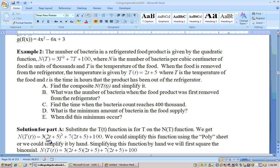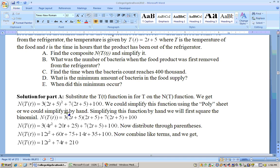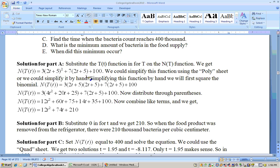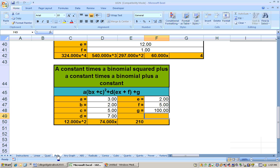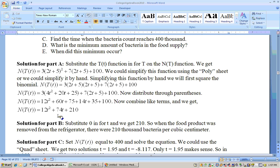We just substitute the 2t plus 5 everywhere there's a T here. If we do that, we would get 3 times (2t plus 5) squared plus 7 times (2t plus 5) then plus 100. We're back to simplifying this expression. You could simplify it by hand or use the poly sheet. My coefficients are typed in at the bottom of the poly sheet, and it foils it and simplifies to get 12x squared plus 74x plus 210.